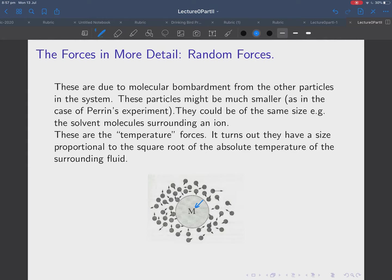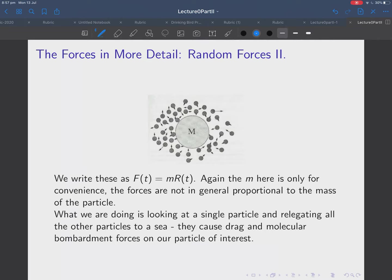But it could be a much larger colloidal particle or something. So, these particular particles, particular forces, are temperature forces, in the sense that if you cool the system down to zero temperature, they go away. Okay. And it turns out that we will see later on that they have a size proportional to the square root of the absolute temperature of the surrounding fluid. So, they're random, but they have a size proportional to T. Square root of T. Okay.